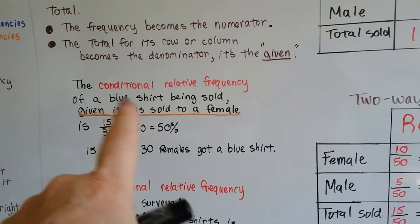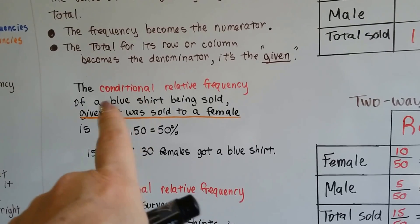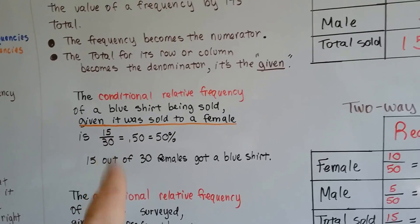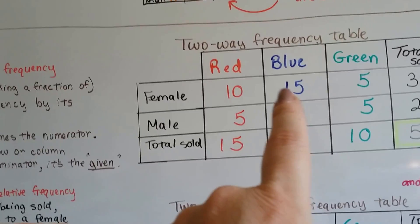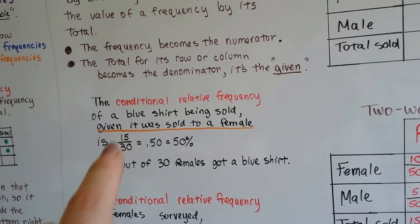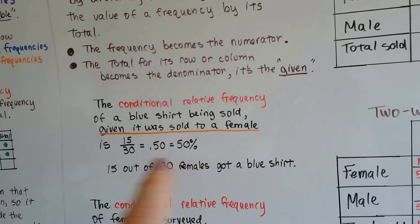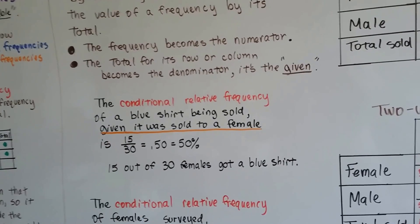And then the first bit of information that we see, the blue shirt, that's going to be our numerator. So female blue is 15. Total female is 30. So our fraction is going to be 15 over 30, which is 50%. That's half of it, right? That's 15 out of 30 females got a blue shirt.